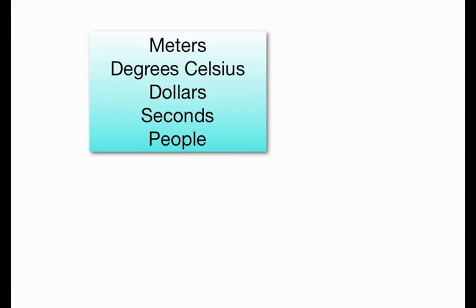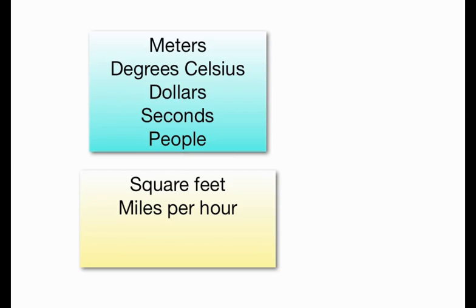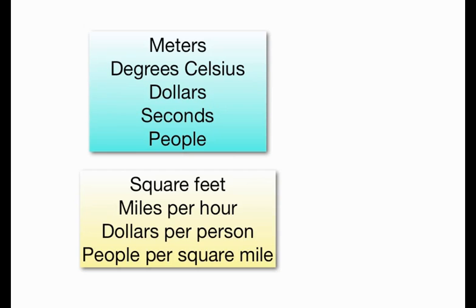We can also combine these units to show different things. For example, square feet for area or miles per hour for speed, dollars per person, people per square mile. All these are very definite ways of measuring certain kinds of things.